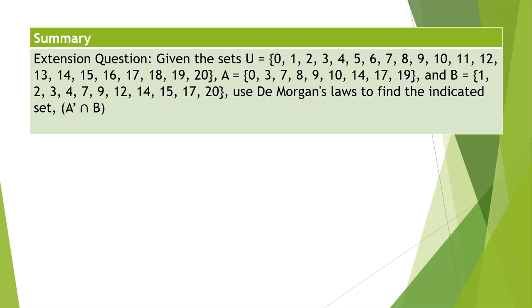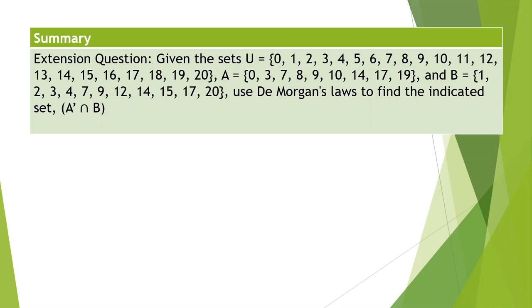So here's a problem I'd like you to try. We're given this union and the same A set and the same B set, but we're going to solve a slightly different problem. So pause your recording, take a few minutes, use De Morgan's law. So here's our problem, here's our sets, and note that we are looking for the intersection of A prime intersect B, the whole quantity negated. So pause and come back.